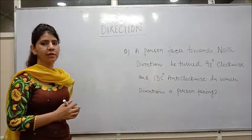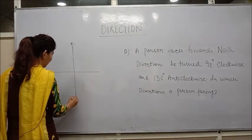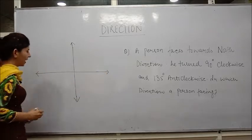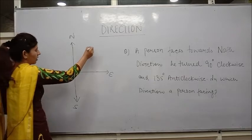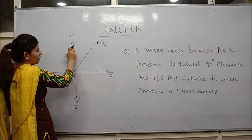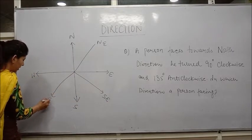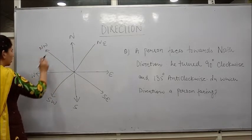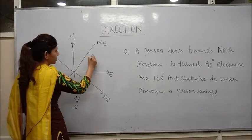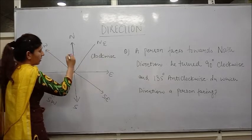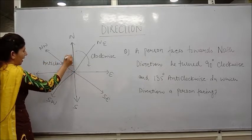Another type of direction question is rotation, where a person turns angle-wise. For angle-wise turning, we need to understand the concept of clockwise and anticlockwise. As we learned, there are four directions: north, south, east, and west. Four more directions are: northeast, which is between east and north; southeast, between south and east; southwest, between west and south; and northwest. Clockwise rotation is as the clock rotates, and anticlockwise rotation is opposite to clockwise.